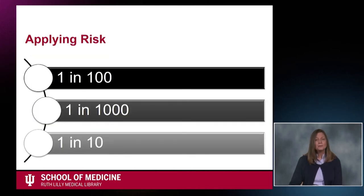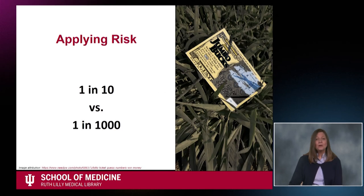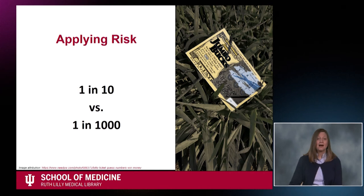Among these probabilities, which one illustrates the highest risk? If your choice was 1 in 10, you're correct. If 1 in 10 people win the lottery, for every 10 people that played the lottery, one person will win. If 1 in 1,000 people win the lottery, for every 1,000 people that played the lottery, one person will win. I would much rather play the lottery where there is a 1 in 10 chance of winning. That is a much higher risk of winning.